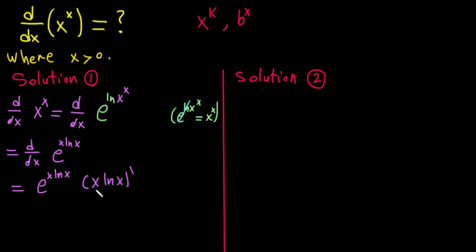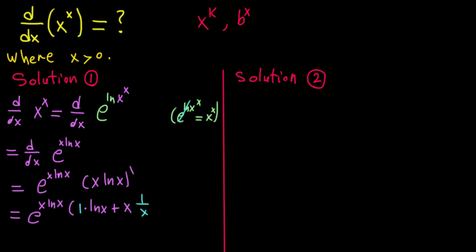It's easy to take the derivative using the product rule. We have e^(x·ln x) multiplied by the derivative of x·ln x. Applying the product rule: the derivative of x is 1 times ln x, plus x times the derivative of ln x which is 1/x. The x and 1/x cancel, giving ln x + 1.